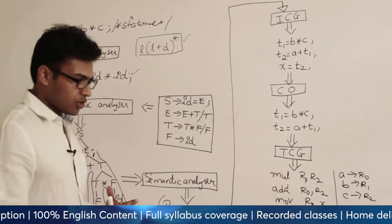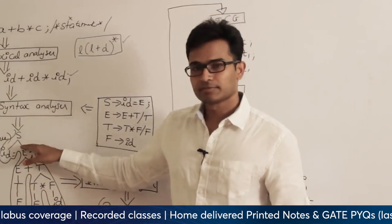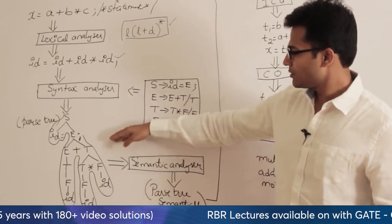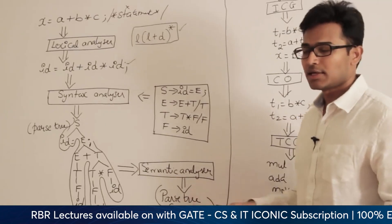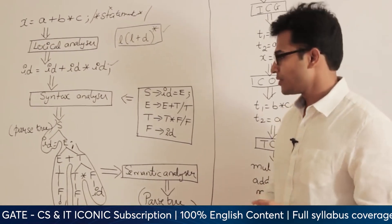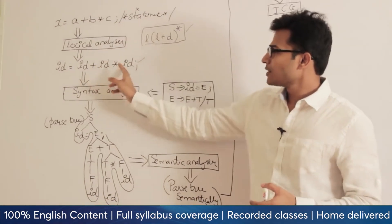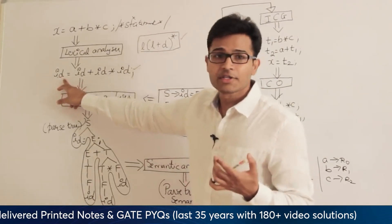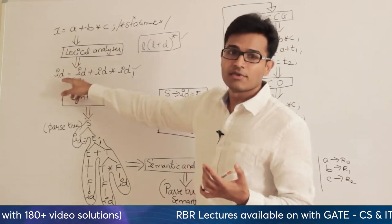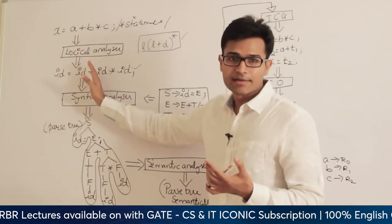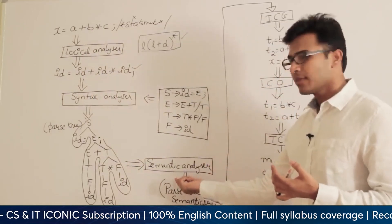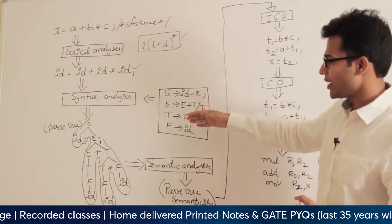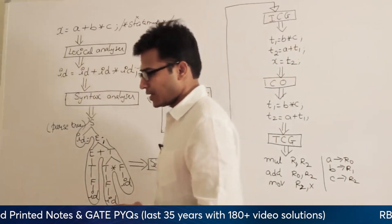The output of the syntax analyzer is a parse tree. This parse tree is given to the semantic analyzer. The semantic analyzer takes the parse tree and verifies it semantically — meaning whether it is meaningful or not. For example, in an assignment like identifier = something, the left-hand side must be a variable. It cannot be a constant, a function name, or an array name. The left-hand side must be a variable compatible with the type of the right-hand side. All such type checkings are done at the semantic analyzer. The output of the semantic analyzer is a semantically verified parse tree.